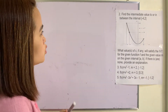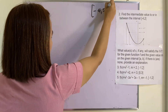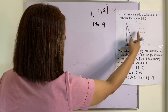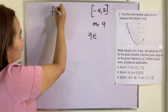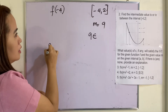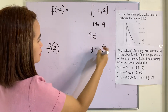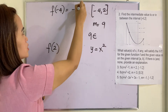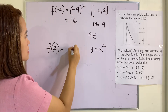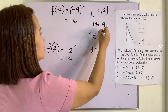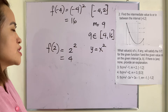Example 2. Find the intermediate value 2, or in between the interval [-4, 2]. Our interval is [-4, 2] and our m given is 9. Let us verify whether 9 is an element of f(-4) and f(2). The given function is y equals x squared. We replace x by negative 4: that is (-4) squared, which is 16. We replace x by 2: that is 2 squared, which is 4. Now we have the interval [4, 16]. Is 9 in the interval [4, 16]? Definitely yes.